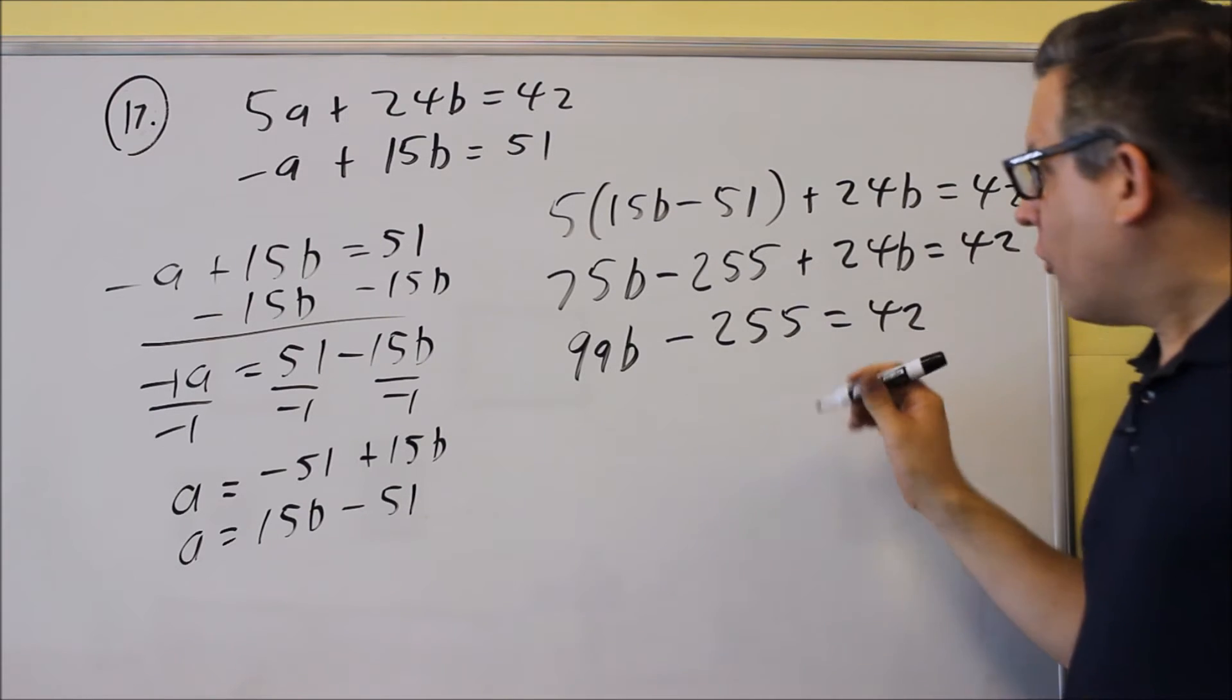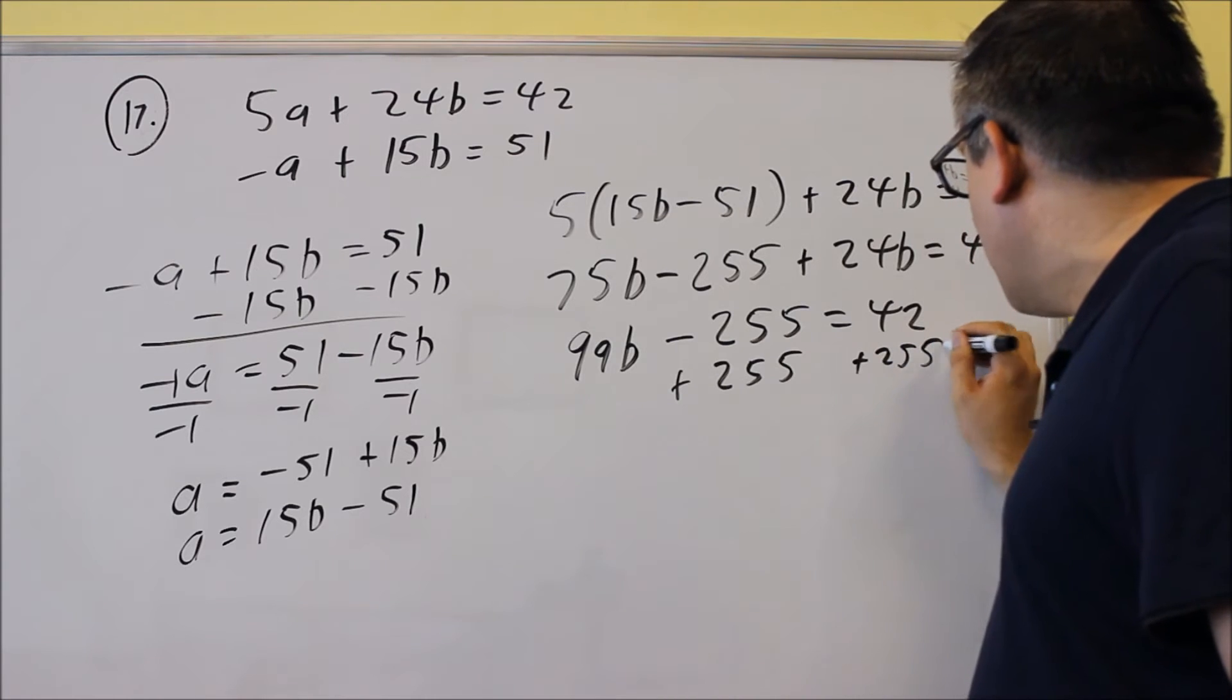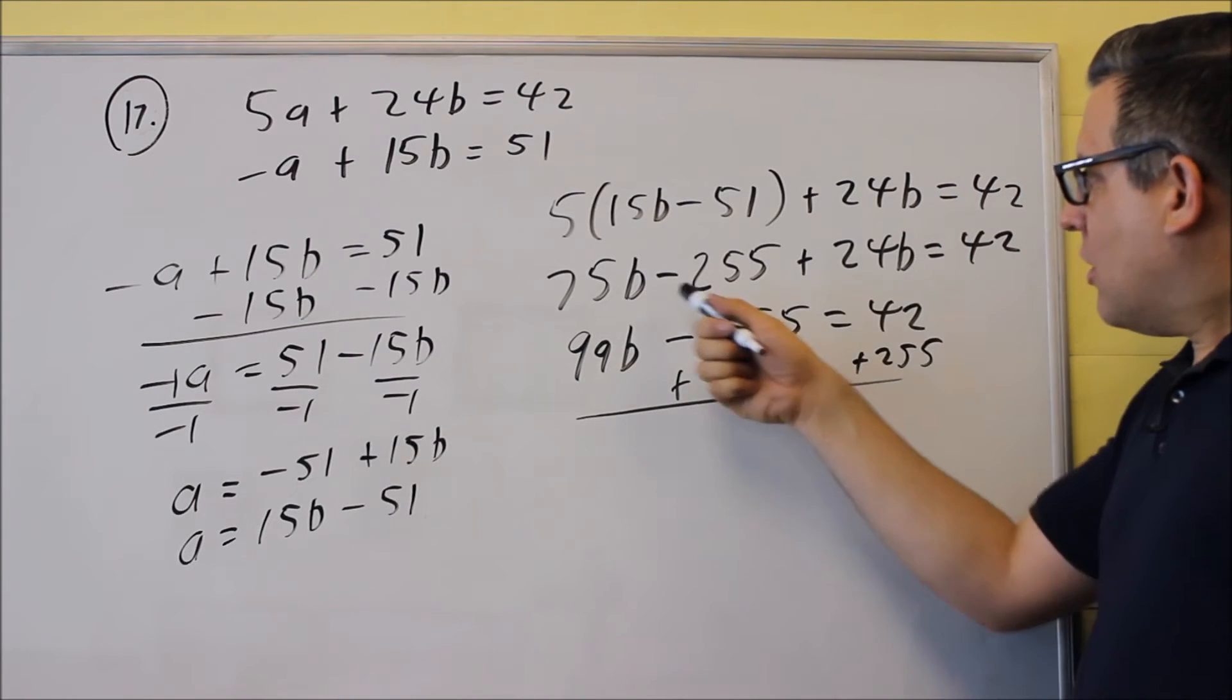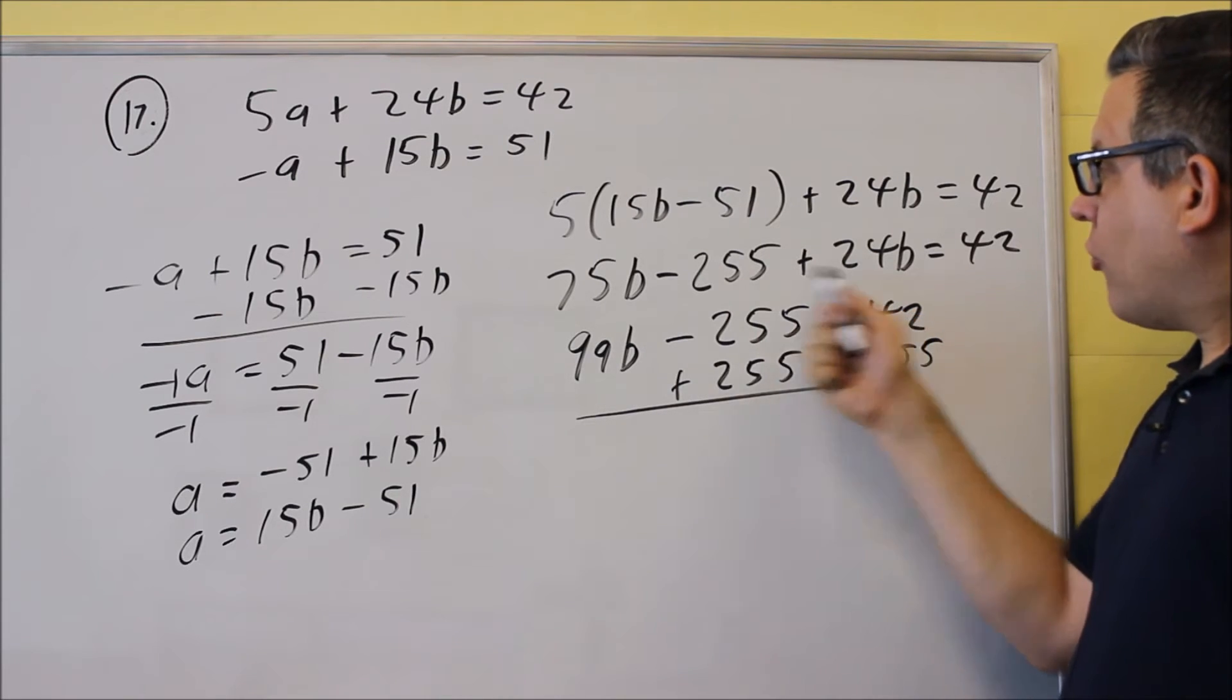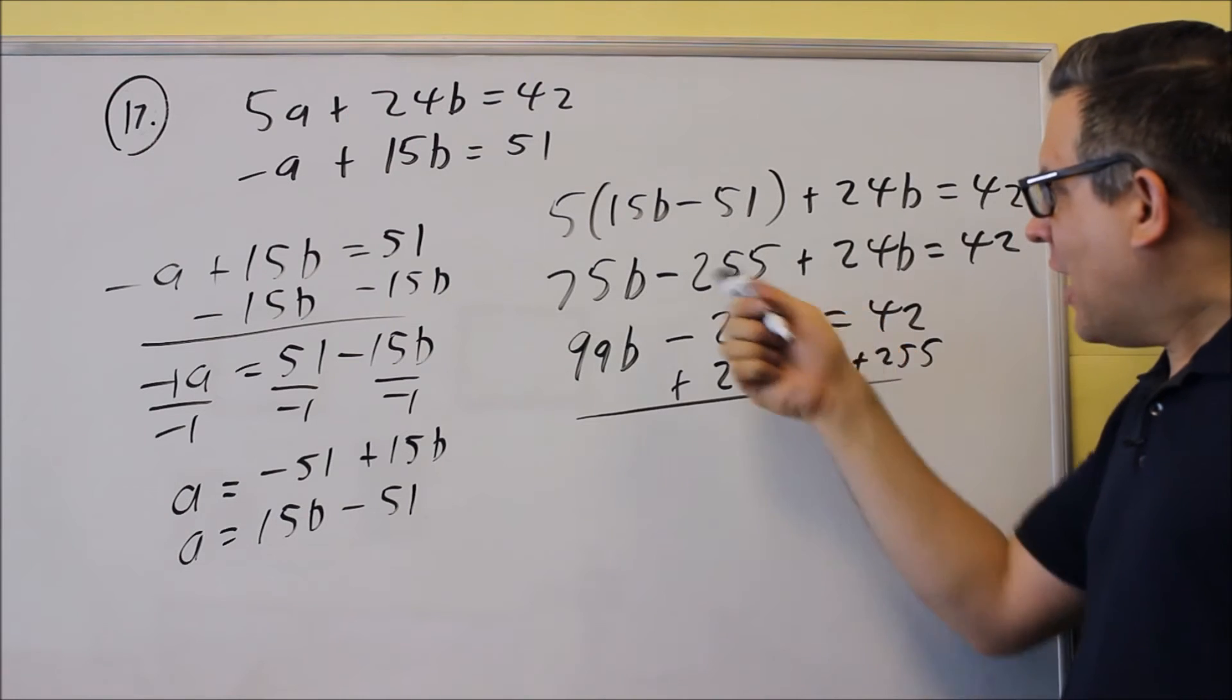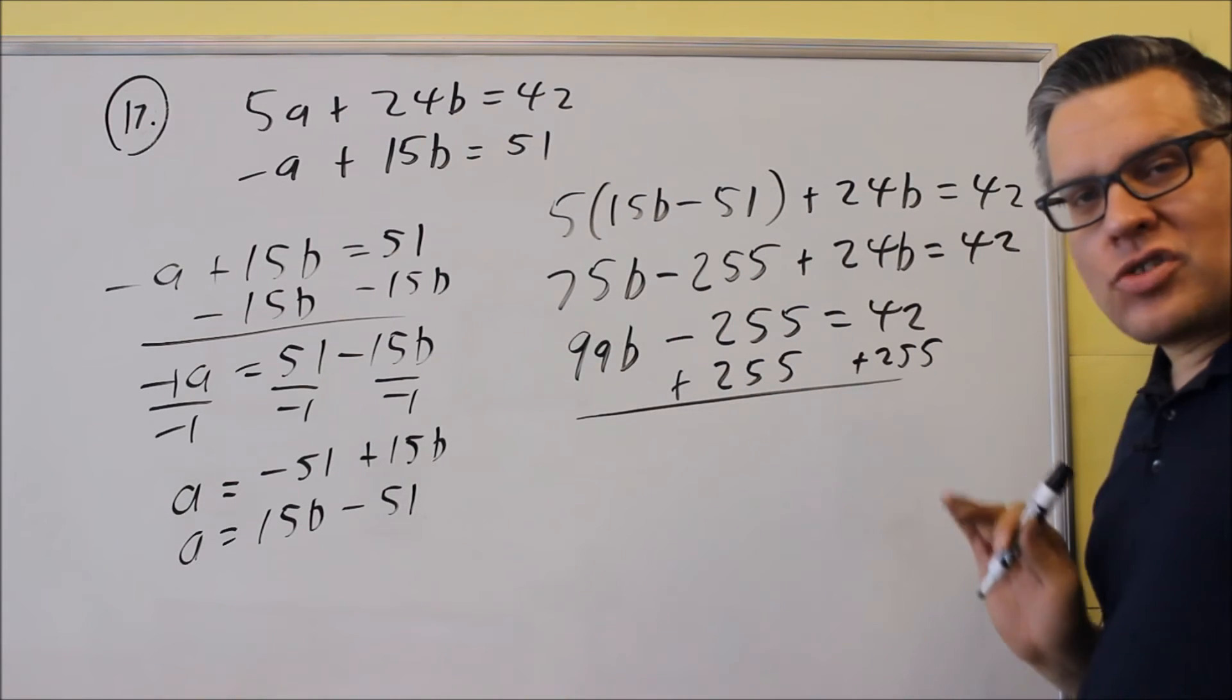Okay, so next thing I want to do is move the 255 over to the other side, so I'm going to add 255 and add 255. By the way, sometimes I see people doing this on a test. Somehow they'll add 24 and add 24 here or subtract it and do something like that. You can't, when you add something or subtract something, you've got to do it to both sides of the equation.